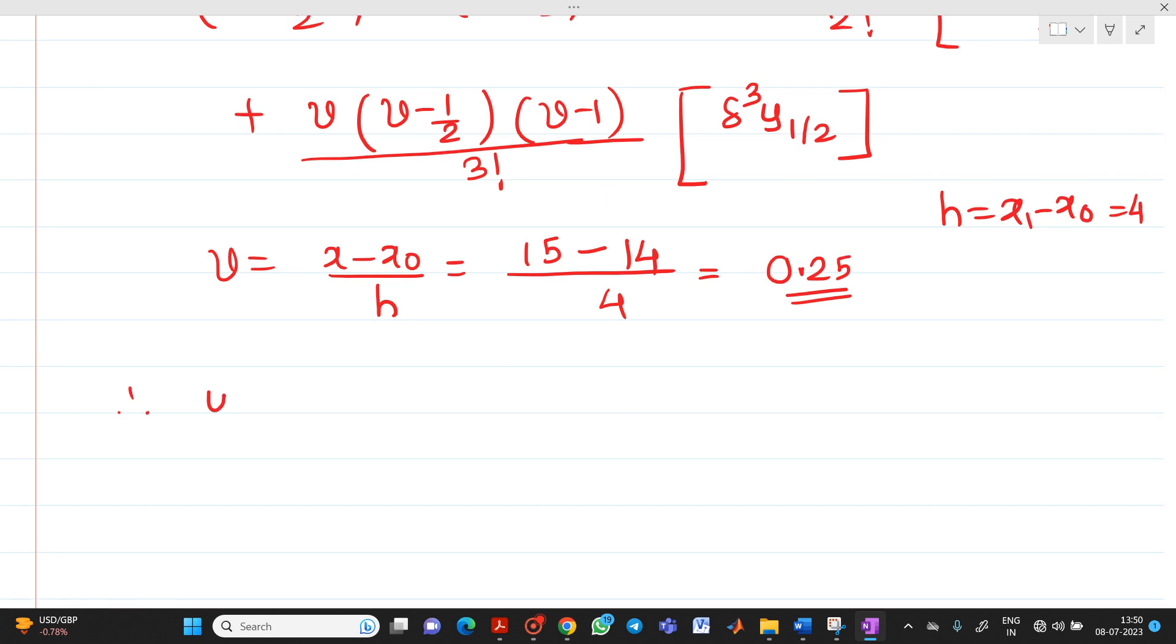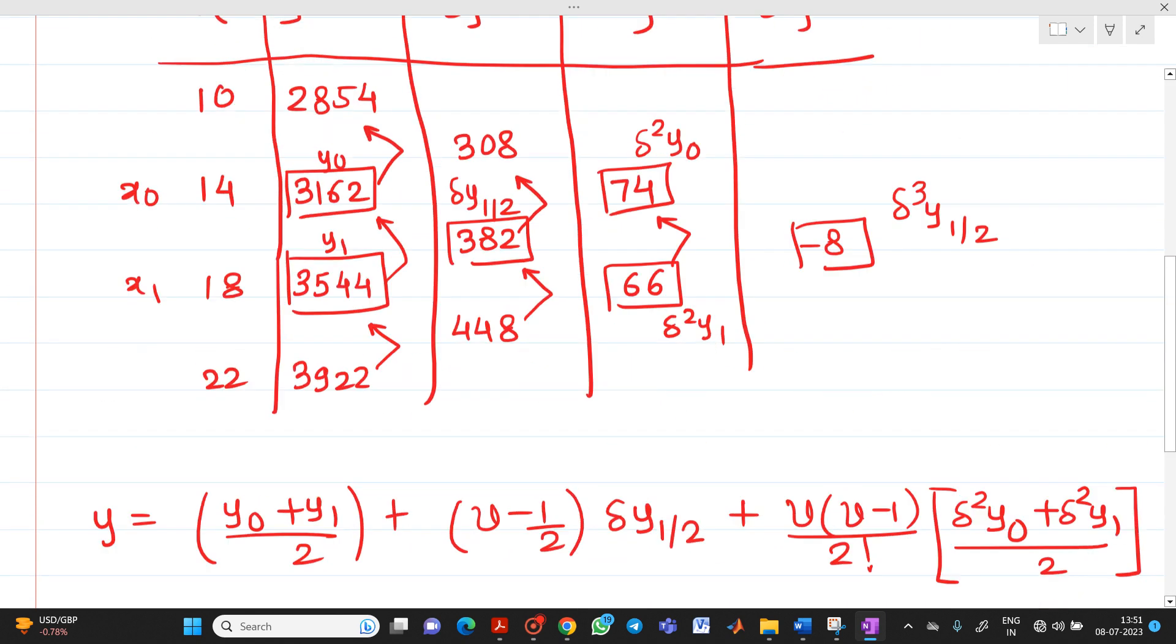So if you substitute here, then after substituting you will get final answer as 3250.875. So you substitute all the values, solve it term by term. So you will get answer of y15 as 3250.875.